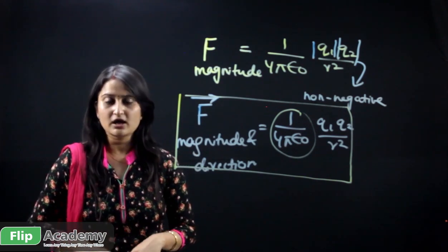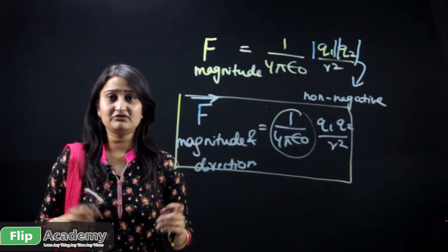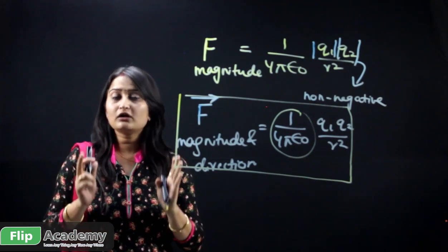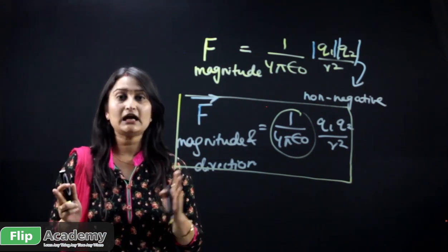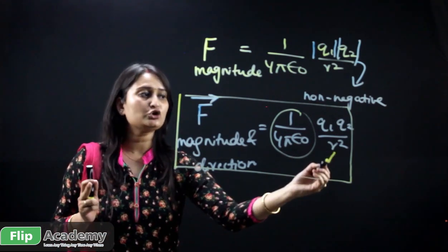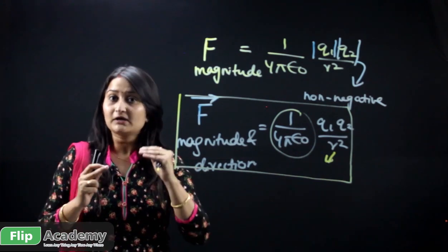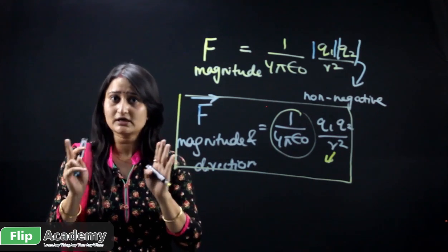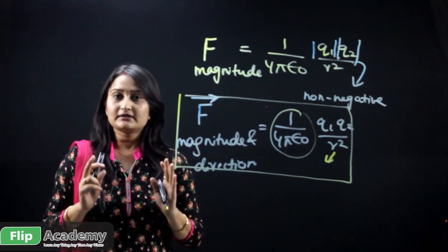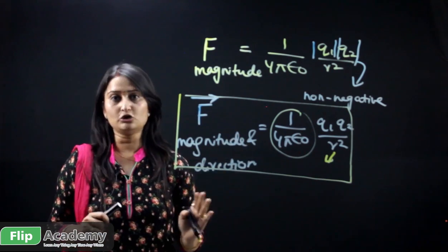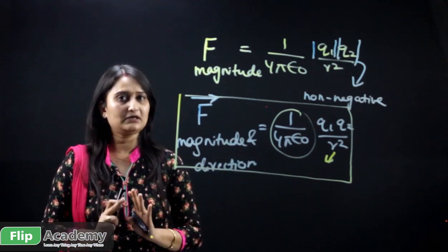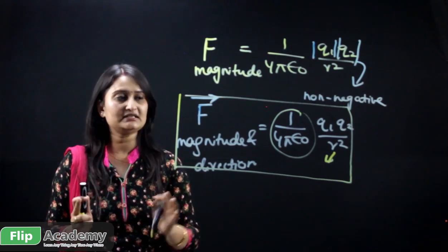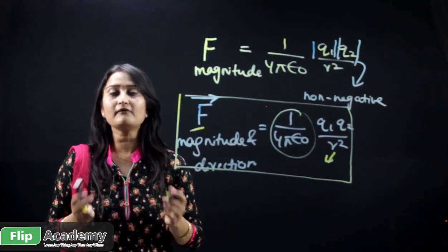Coulomb's law states that the force, which is a vector quantity, equals the constant 1/(4πε₀) times the product of the two charges Q1 and Q2 — which can be like or unlike charges — divided by the square of the separation between them, along a straight line. These are the important points that conclude from this law.